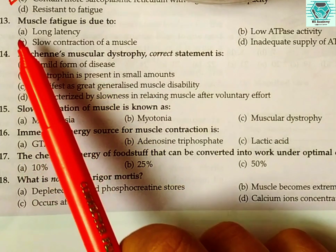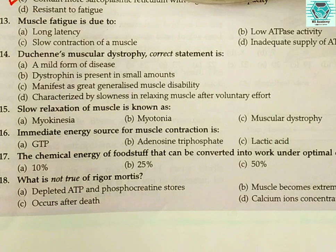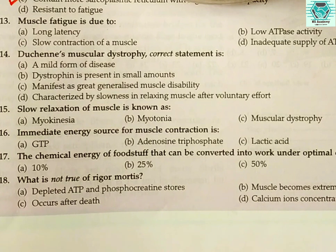Number thirteen: muscle fatigue is due to — (a) long latency, (b) low ATPase activity, (c) low contraction of muscle, or (d) inadequate supply of ATP? The right answer is (d): muscle fatigue occurs due to inadequate supply of ATP.